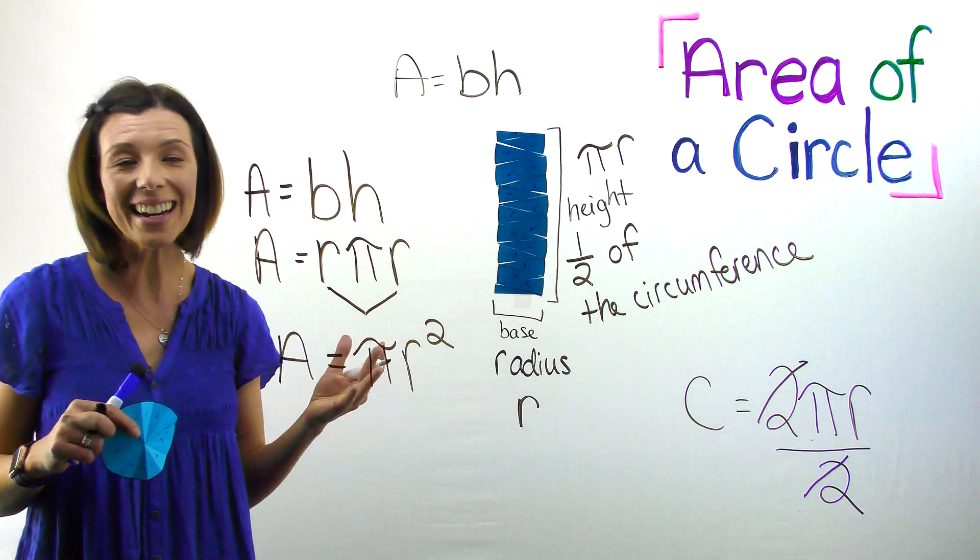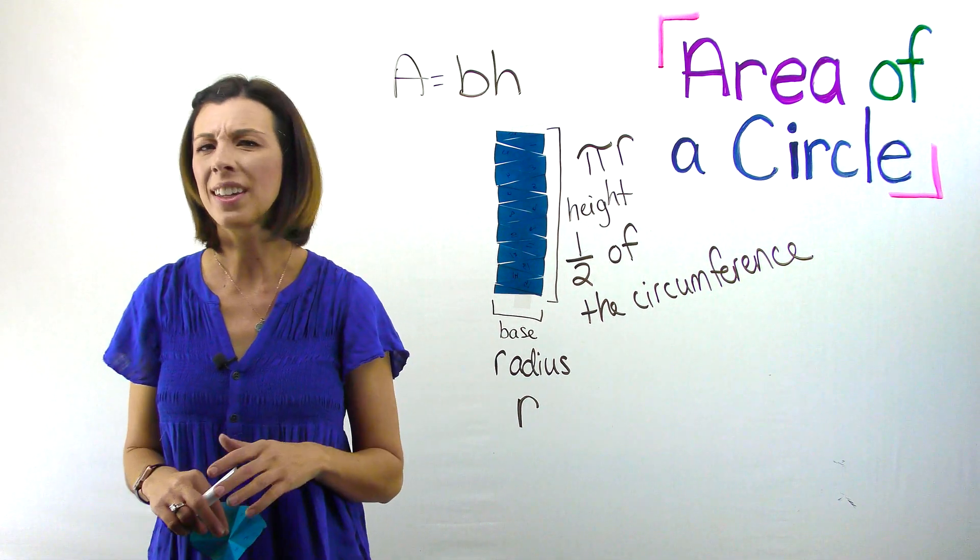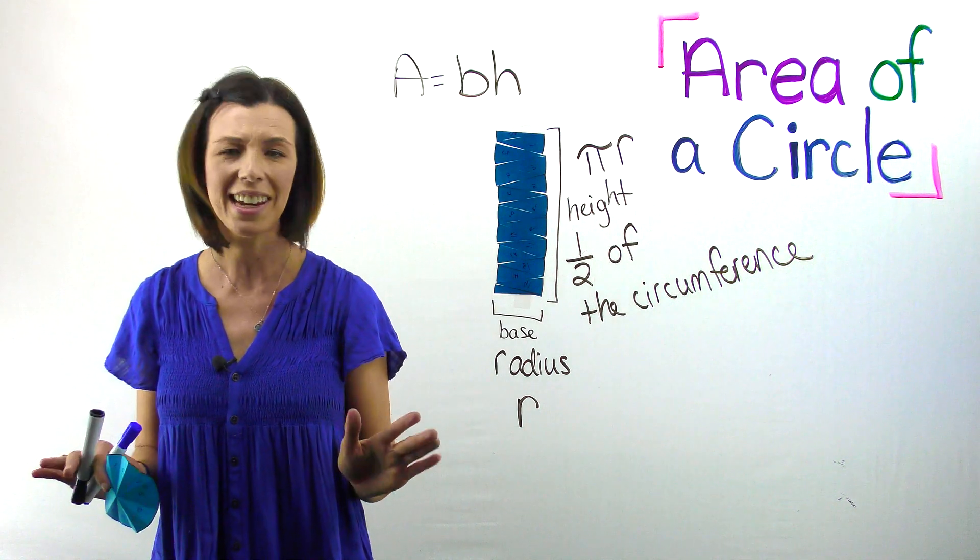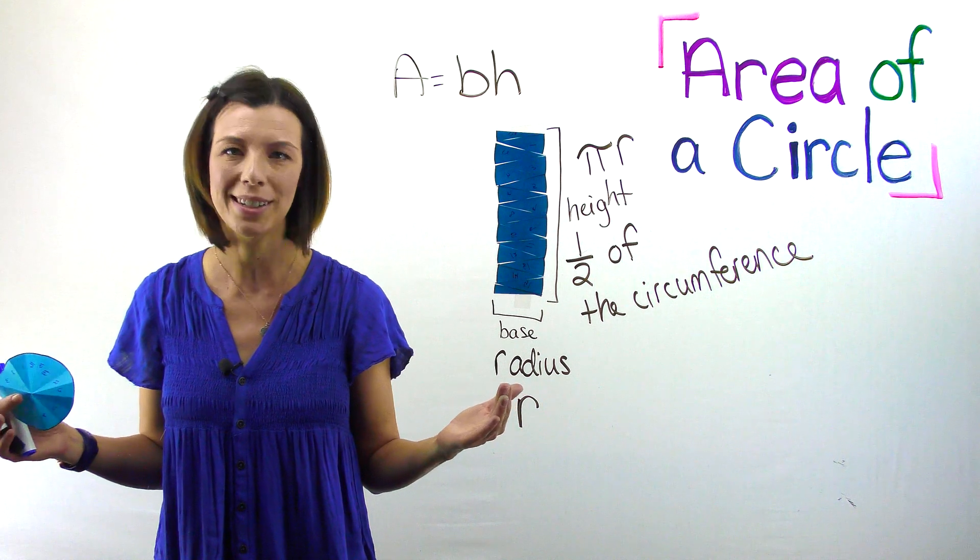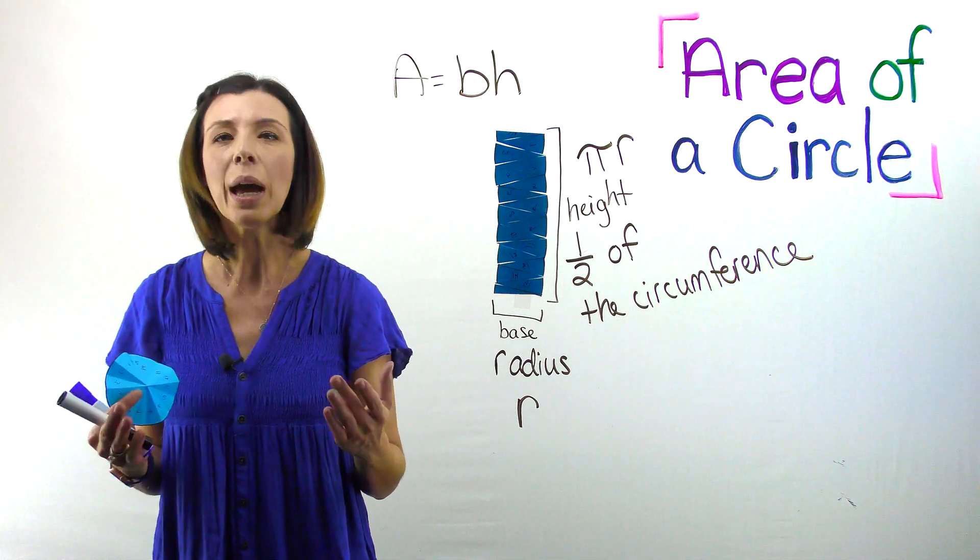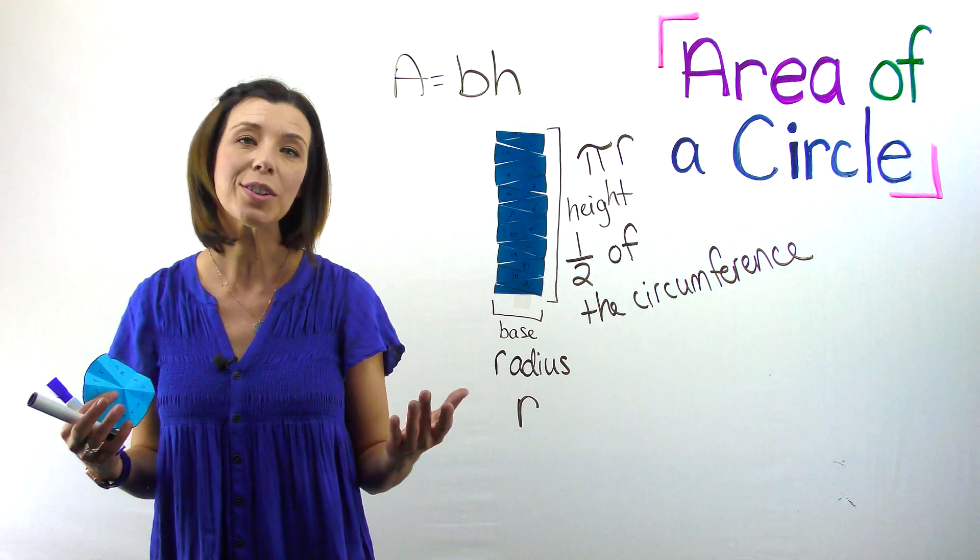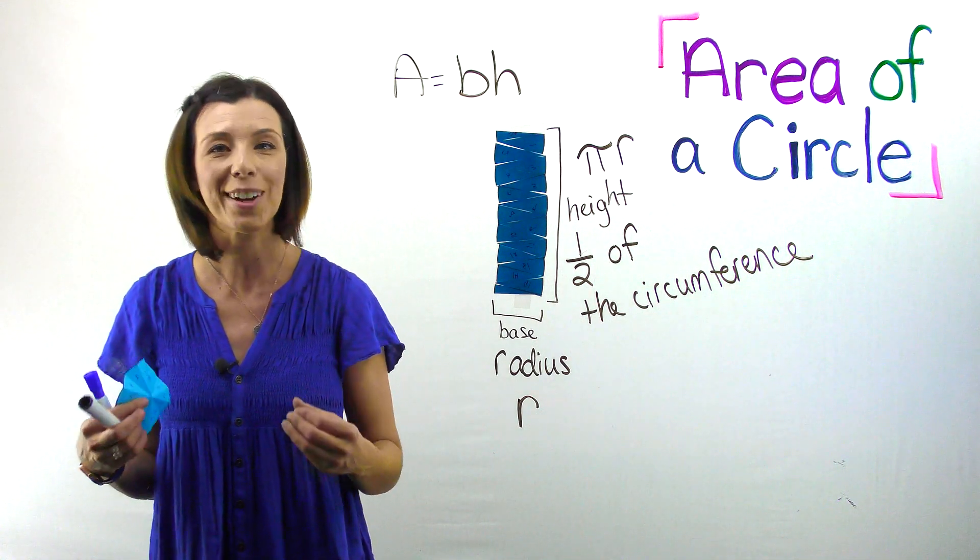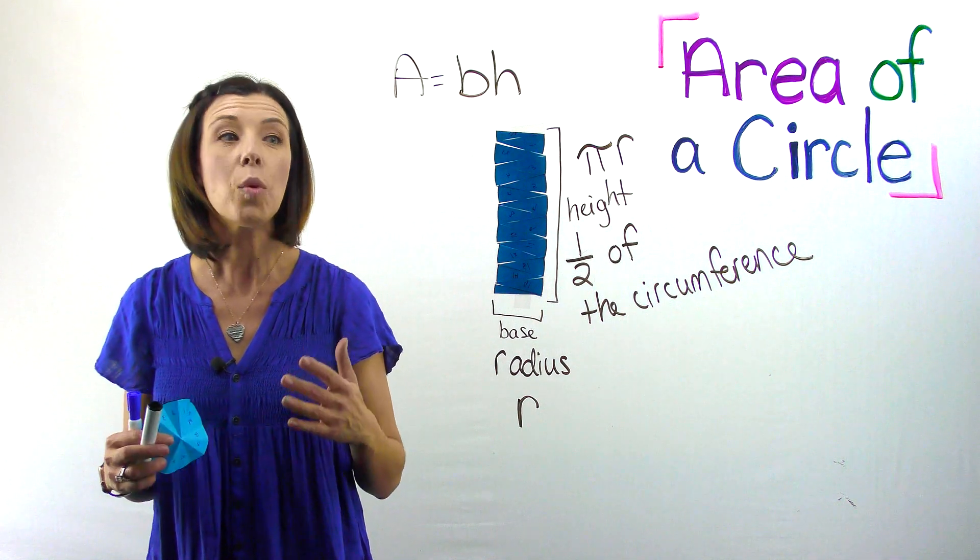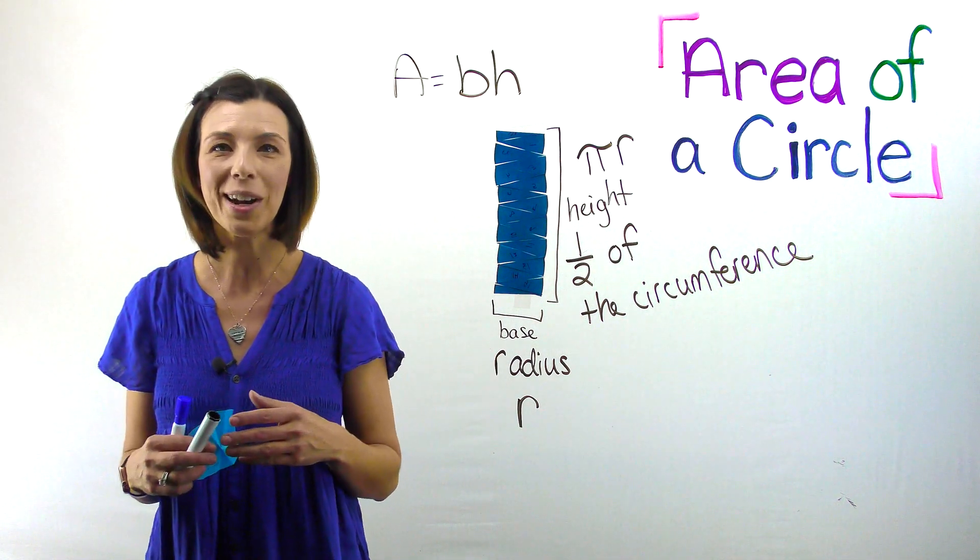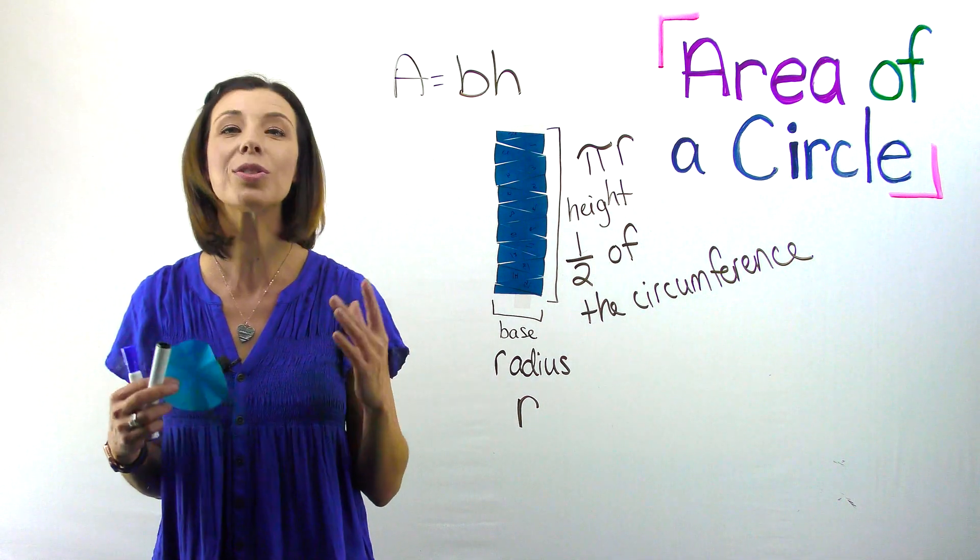Crazy, right? This hopefully just blew your mind. Now, you might be sitting there thinking, Marsha, I've never seen anything like this before. This sounds crazy. I always just memorize the formula. But memorizing the formula allows for error. We need to understand where the math actually comes from. Remember, keep a growth mindset when it comes to this. I want you to practice teaching someone else. Walk yourself through the activity again. Get two new circles and try it again.